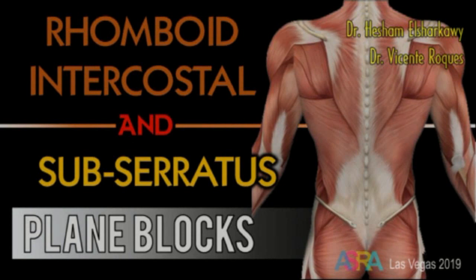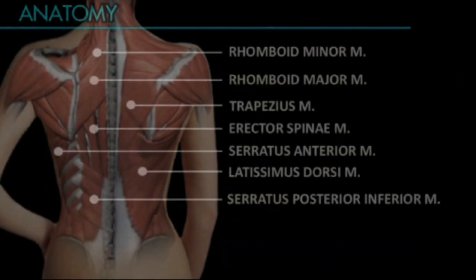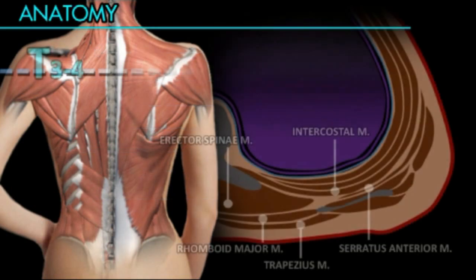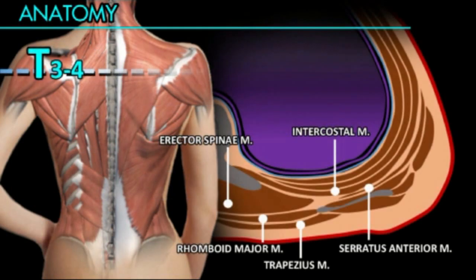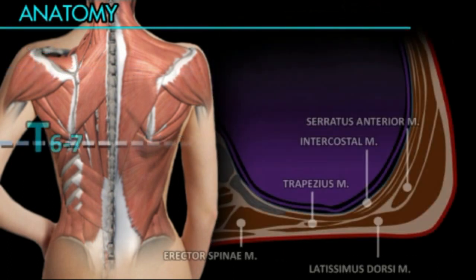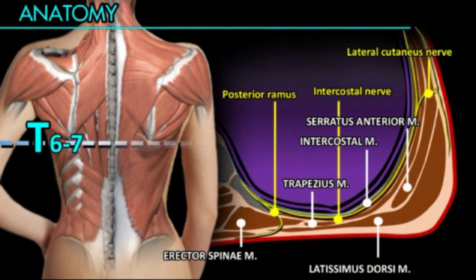The superficial muscles are trapezius and latissimus dorsi, deeper the rhomboid and the serratus anterior muscle. The tissue plane deep to the rhomboid extends medially deep to the erector and laterally deep to the serratus anterior. The tissue plane deep to the serratus extends medially deep to the erector spinae.